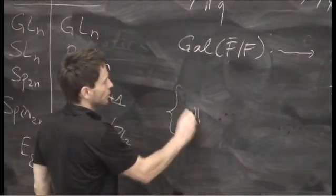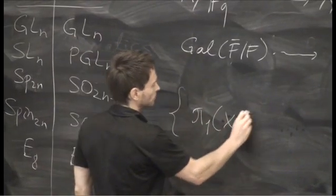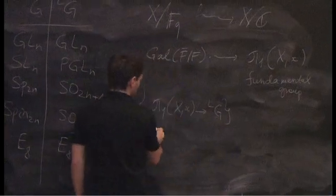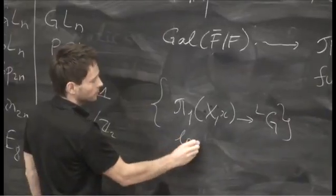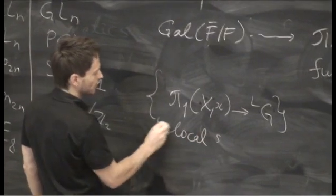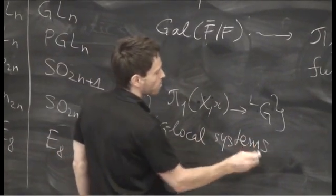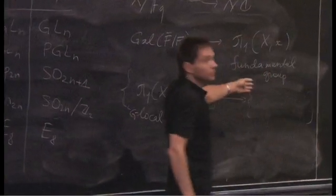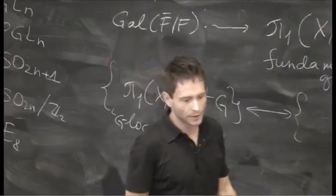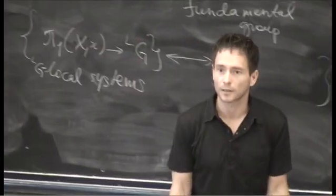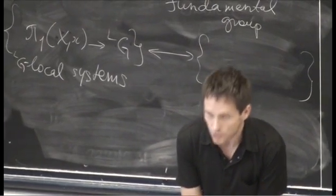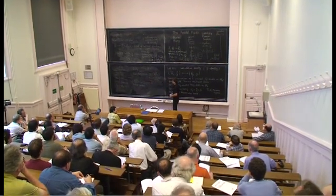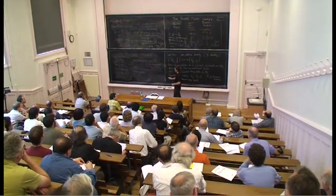On this side of the correspondence we would have homomorphisms like this — or another way to say it, local systems; LG local systems. And on the other side we have to find a geometric analog, a geometric incarnation of the automorphic representations. It's a long story going from automorphic representations to this geometric object.